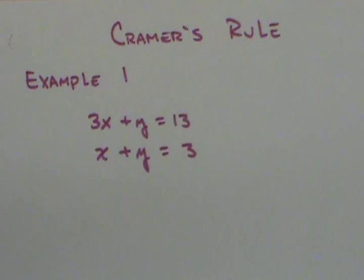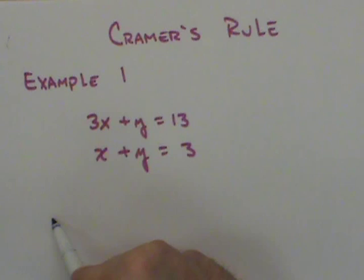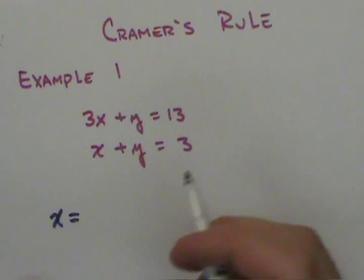Example 1 for Cramer's Rule. Here we have a system of equations that we want to set up. And so we'll start by saying we want to find the x coordinate for a point of intersection.